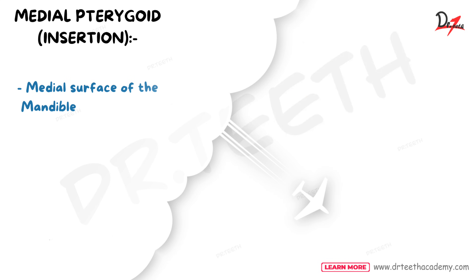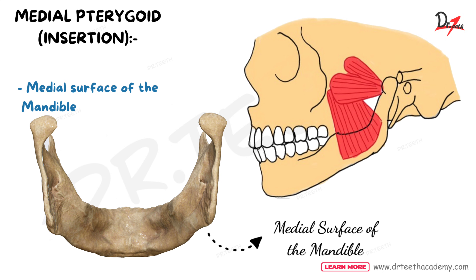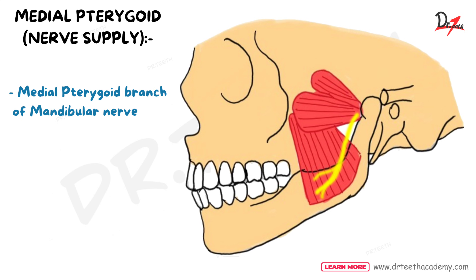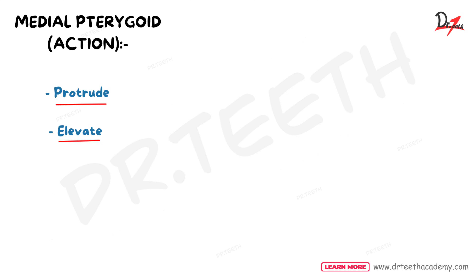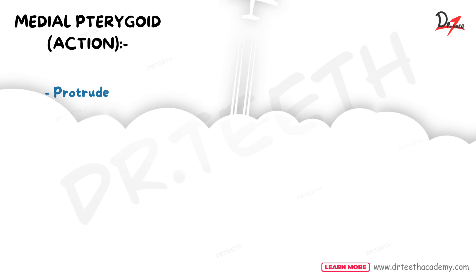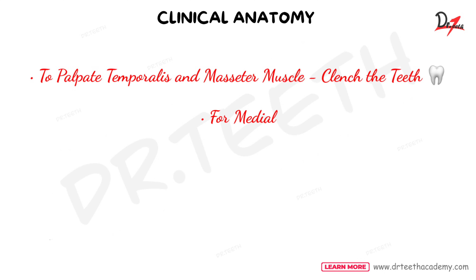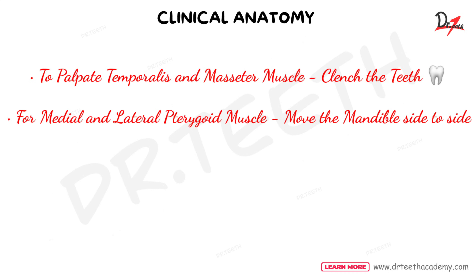This muscle inserts on the medial surface of the ramus of mandible, posterior inferior to the mylohyoid groove, and also on the inner aspect of the angle of mandible. Its nerve supply is by the medial pterygoid branch of the mandibular nerve. Its action is to protrude and elevate the mandible. Clinically, you can palpate the temporalis and the masseter by asking the patient to clench their teeth, and the medial and lateral pterygoid can be tested by asking the patient to move the mandible from one side to the other.